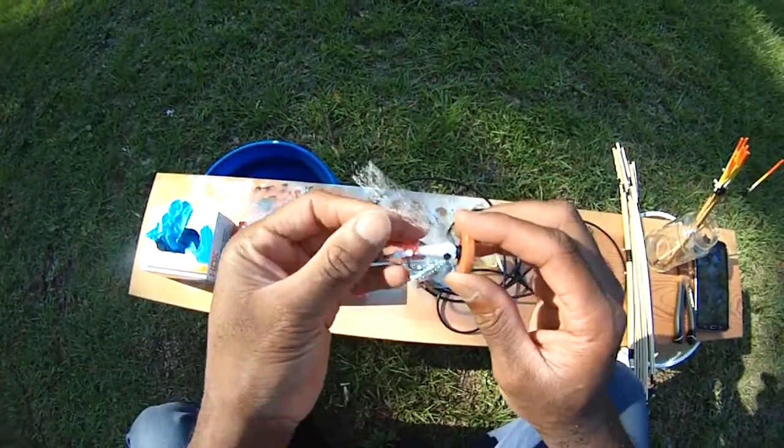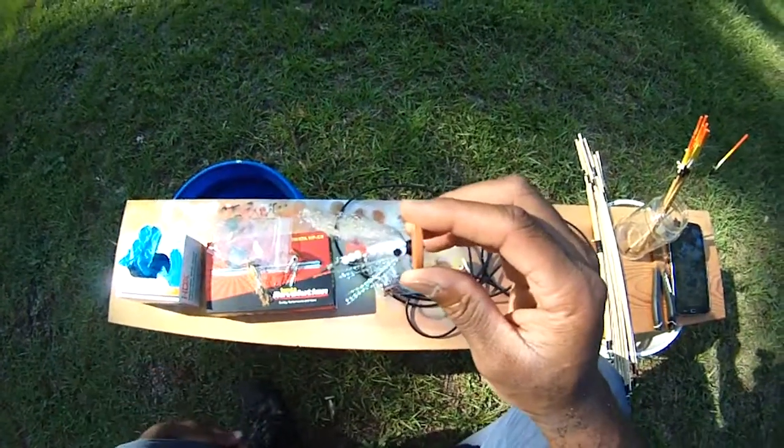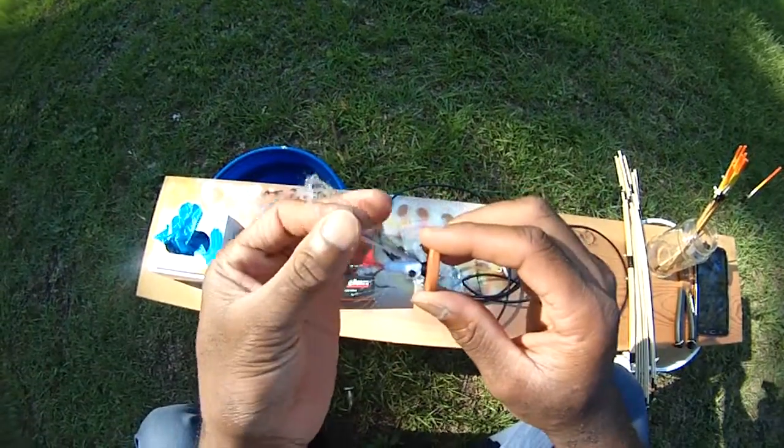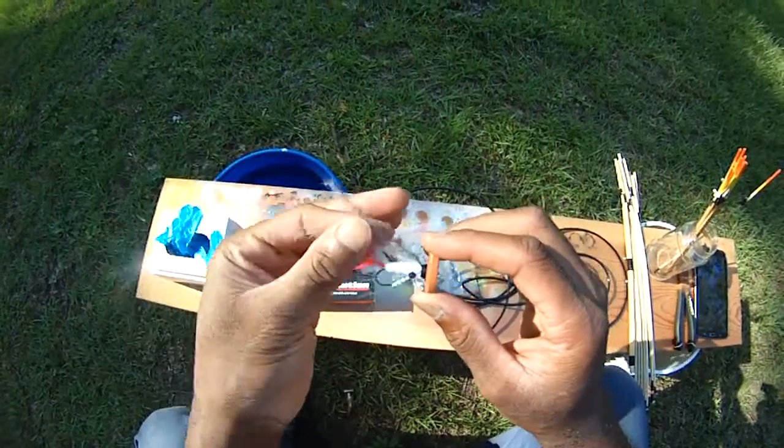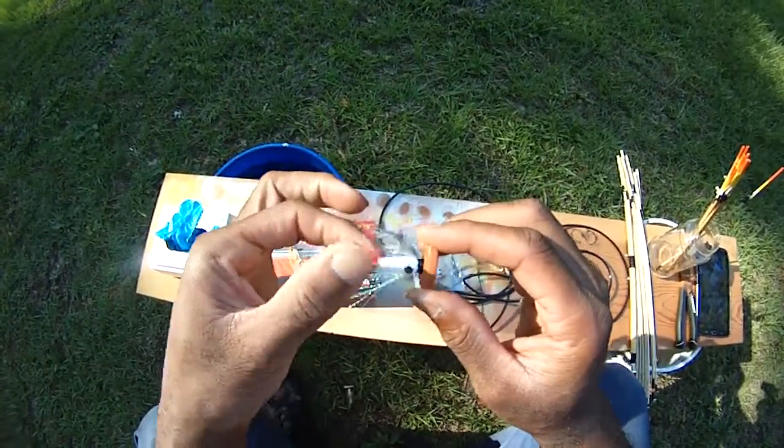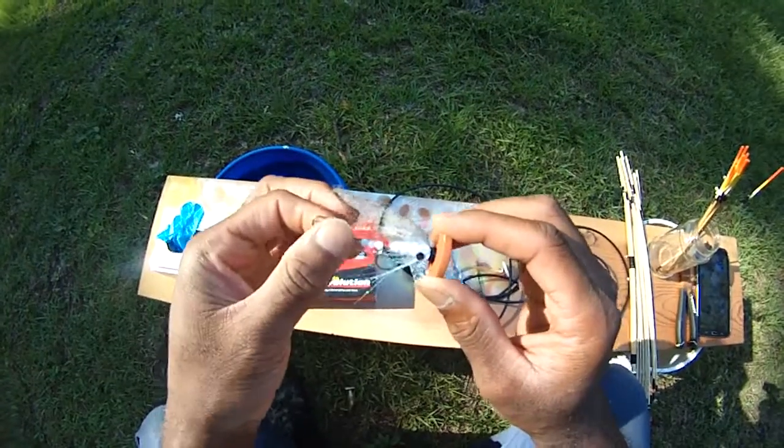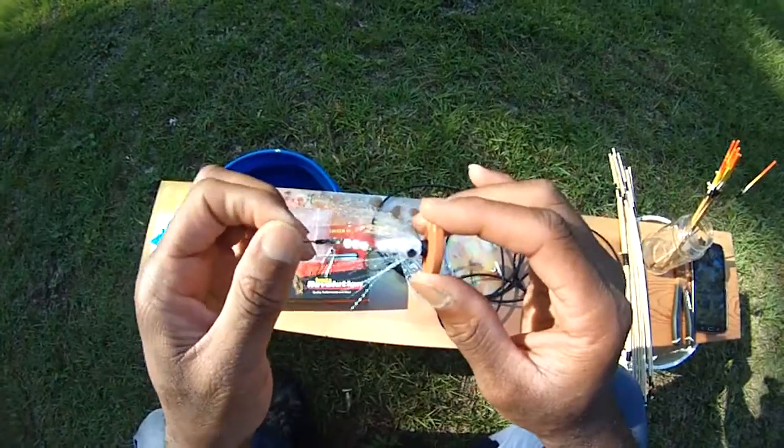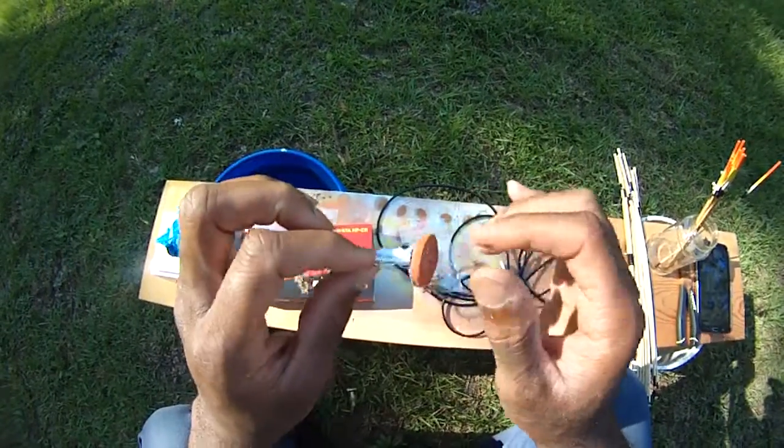Here I have what I call the silver bleeder. It's a silvery, grayish shad with a bleeding tuft of Congo hair here. The trailing hook always rides up, and I've caught a lot of fish on that trailing hook like that.